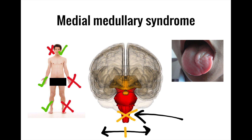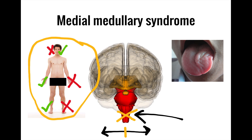Let's see how we could have predicted the location of this lesion based on the clinical findings. First, we know we're in the brainstem because of crossed findings — contralateral hemiparesis in the body but not the face. Next, we can figure out the level of the lesion by determining what cranial nerves are involved.